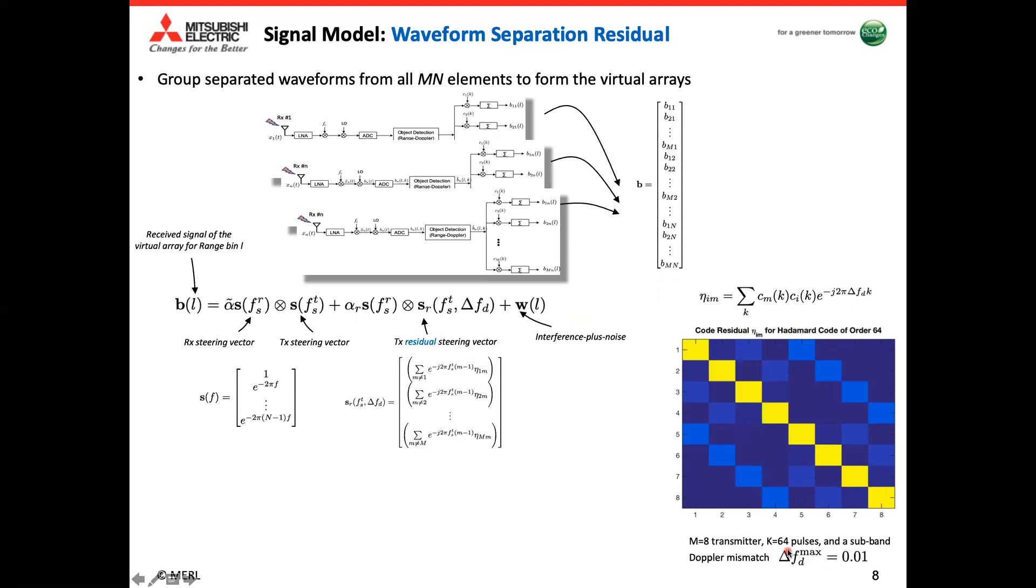So instead of looking at the unknown delta f_d, let's say we know the maximum Doppler mismatch, which normally is one half of the Doppler beam. So in this case, we can pre-compute the eta matrix. In this example, we have eight by eight because we have eight transmitters. So by using a given maximum Doppler mismatch, let's say 0.01, then what we can see here is for all the off-diagonal, which is the eta term. So you can see many of them are very small, but only a few have significant term. So our idea is we can construct the subspace basically from the pre-computed significant term in this code residual matrix and then multiply by our unknown subspace coefficient in order to approximate the true transmitter residual steering vector.